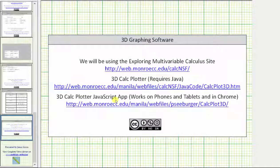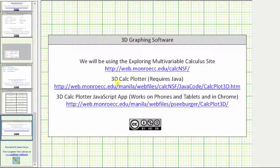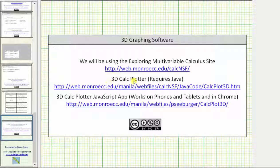We will be using the 3D Calc Plotter from the Exploring Multivariable Calculus site shown here, and there are two options. One option is the 3D Calc Plotter that requires Java,